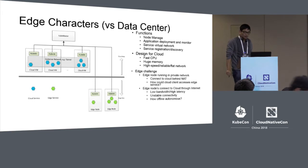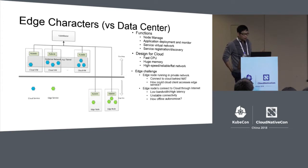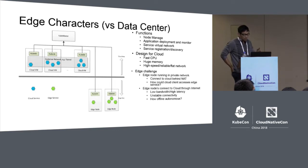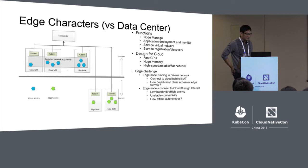The second issue is that edge nodes connect to the cloud through the internet rather than a data center network. The internet's bandwidth is low, latency is high, and more importantly it is unstable — the internet may go offline or break sometimes. For this situation, services running at the edge need to handle offline autonomous operation.